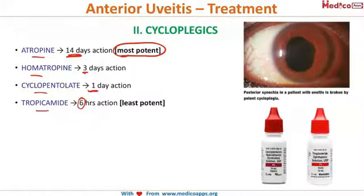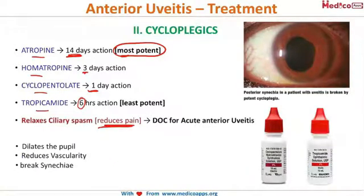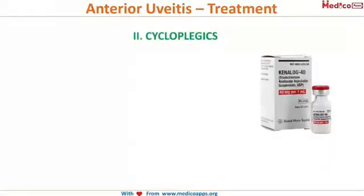Cycloplegics are used in uveitis because they relieve ciliary spasm, relieving the patient's pain. They also dilate the pupil and reduce vascularity, helping to break synechiae. As seen in this picture, the synechiae are broken and the pupil is no longer in the festooned pattern after using cycloplegics.